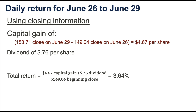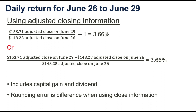We can do the same calculations using the adjusted close. We take the adjusted close on June 29, divide it by the adjusted close on June 26, subtract 1, and we get a 3.66% return. You'll note that this return is very close to the other return from the previous slide. This return includes both the dividend and the capital gain. They vary a little bit because of rounding error — if we took the adjusted close out to three decimal places, they would vary less.